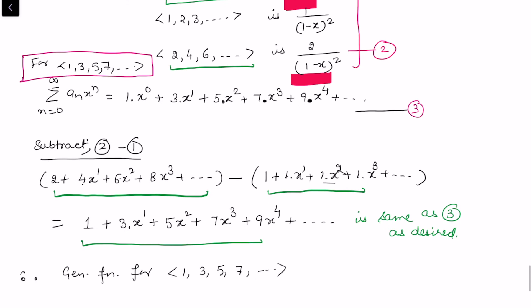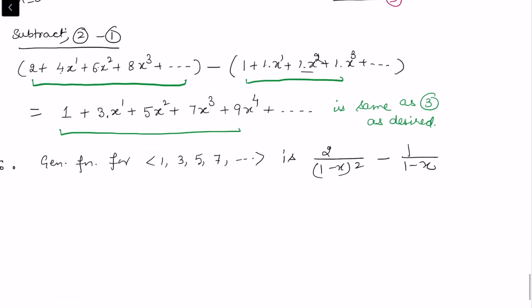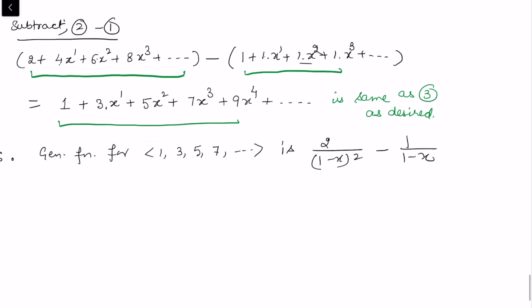So we subtract: 2/(1 - x)² minus 1/(1 - x). Taking the LCM, which is (1 - x)², we get 2 minus (1 - x) in the numerator.